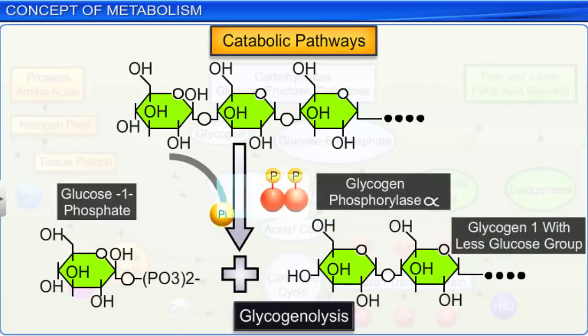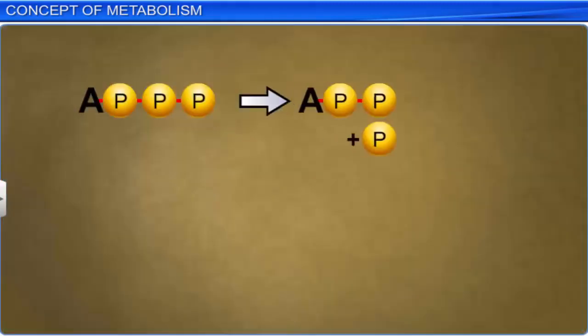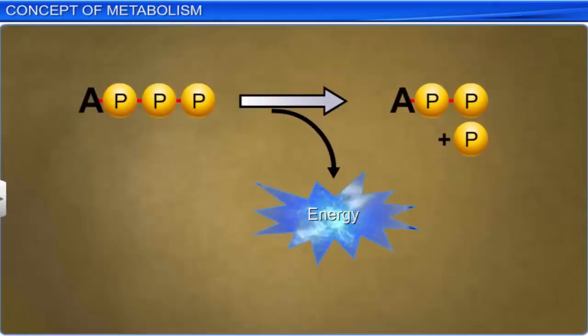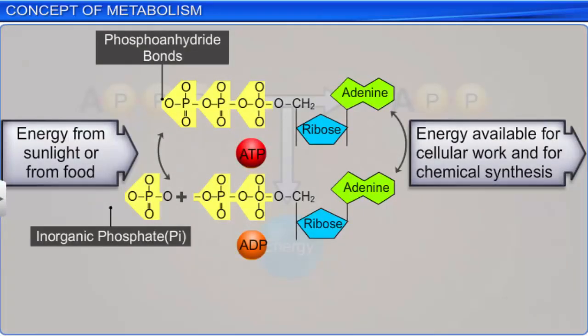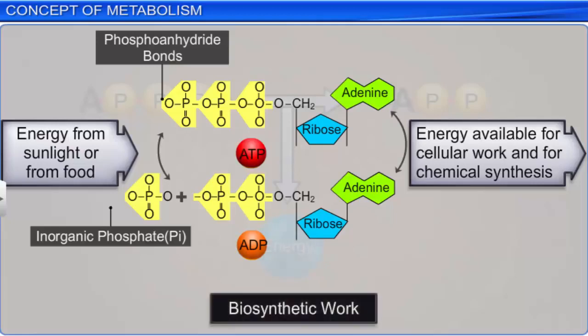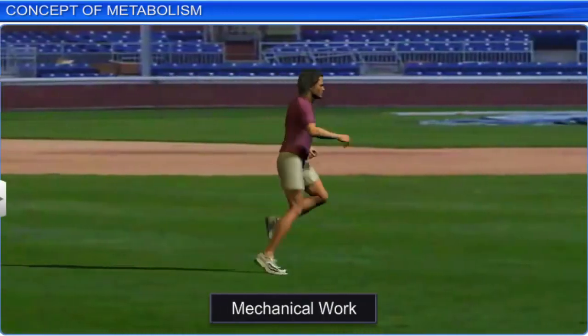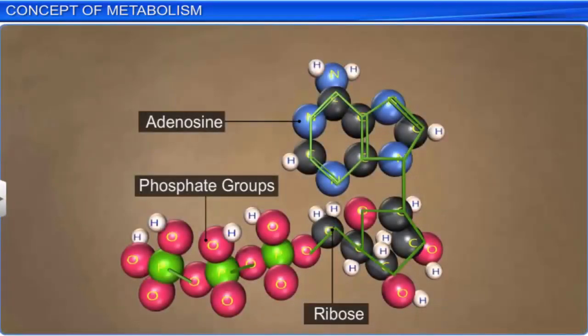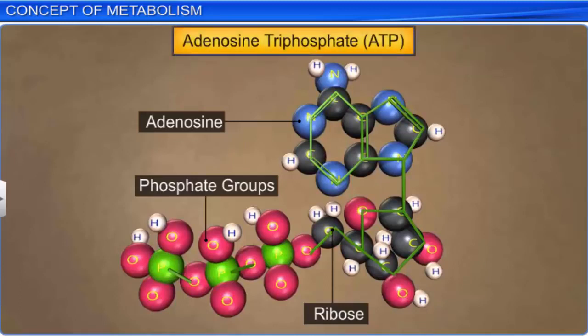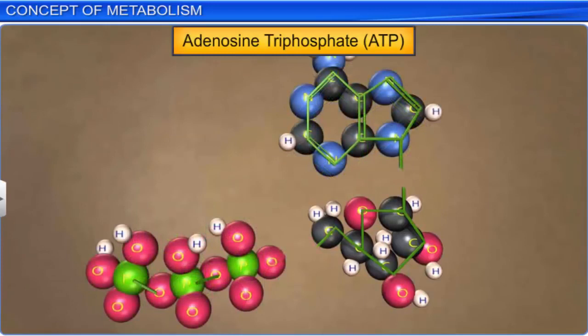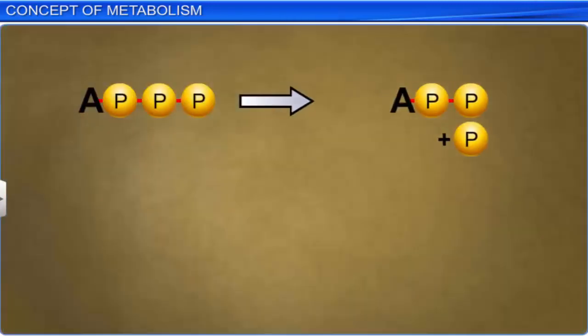The energy released during degradation is trapped by living organisms and stored as chemical bonds. Later, this bond energy is utilized for biosynthetic, osmotic, and mechanical work, whenever the need arises. The most important biomolecule that contains energy in its chemical bonds is adenosine triphosphate, or ATP. When bonds of ATP break, a lot of energy is released. ATP also transports chemical energy within cells for metabolism.